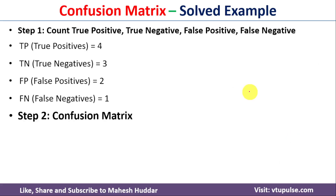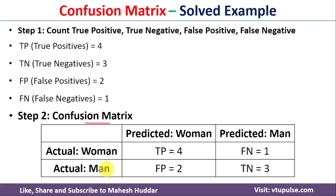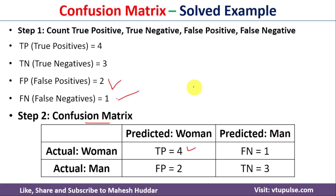Next we compute the confusion matrix, which contains two columns and two rows. The columns represent predicted woman and man; the rows represent actual woman and man. Actual woman and predicted woman is true positive = 4. Actual woman and predicted man is false negative = 1. Actual man and predicted woman is false positive = 2. Actual man and predicted man is true negative = 3.